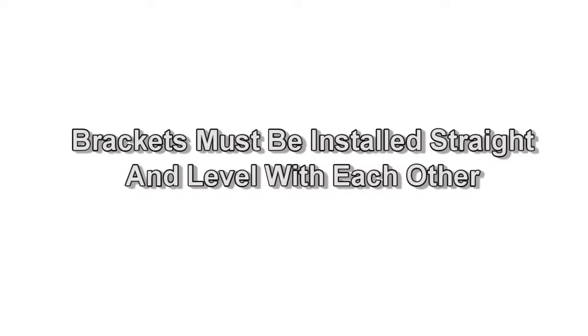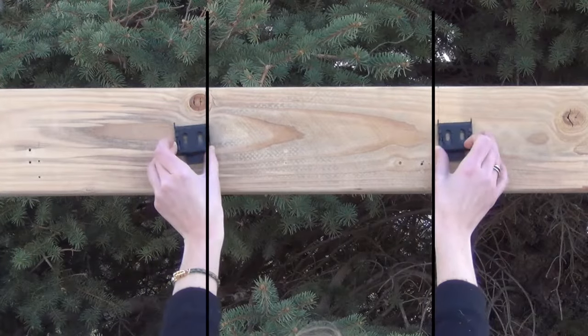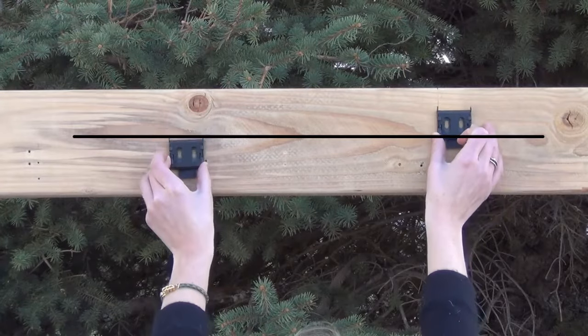It is very important that your valence brackets are installed level with each other. Your shade will not install correctly unless your valence brackets are perfectly aligned with each other. We recommend using a laser level to align the screw holes.